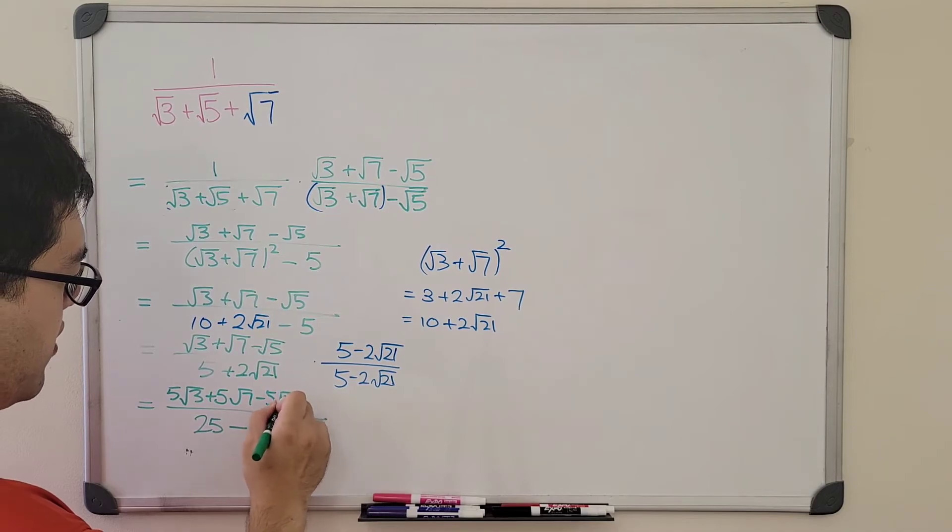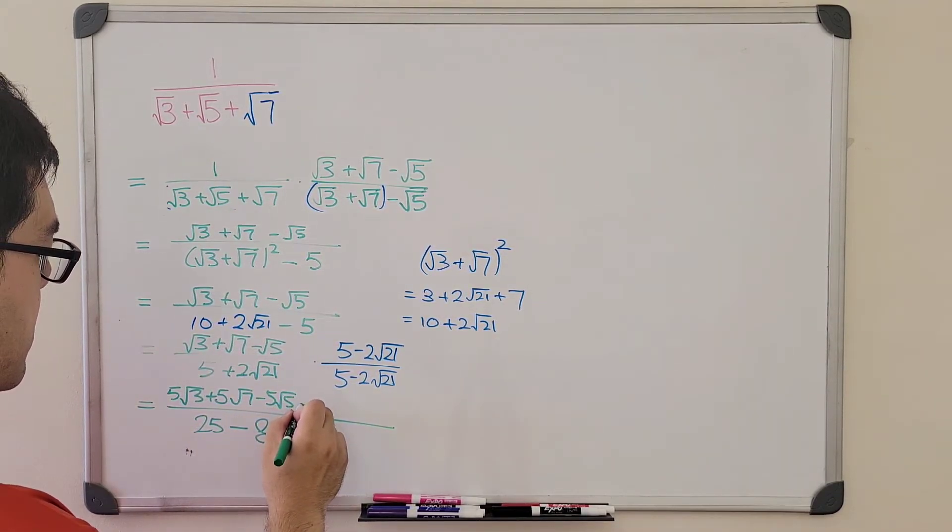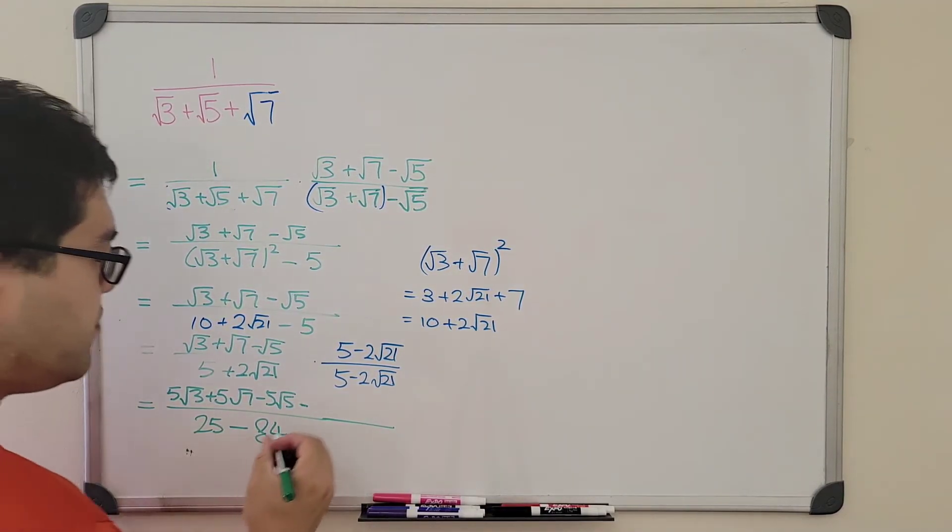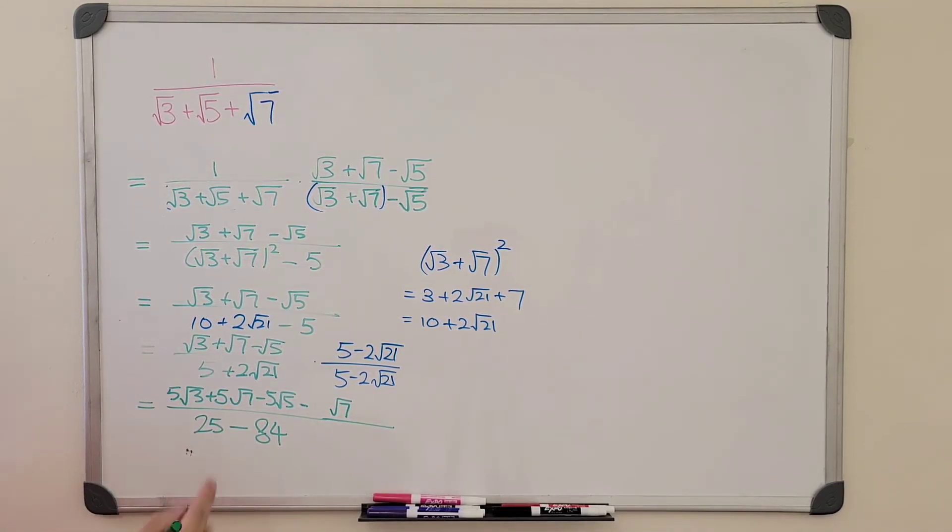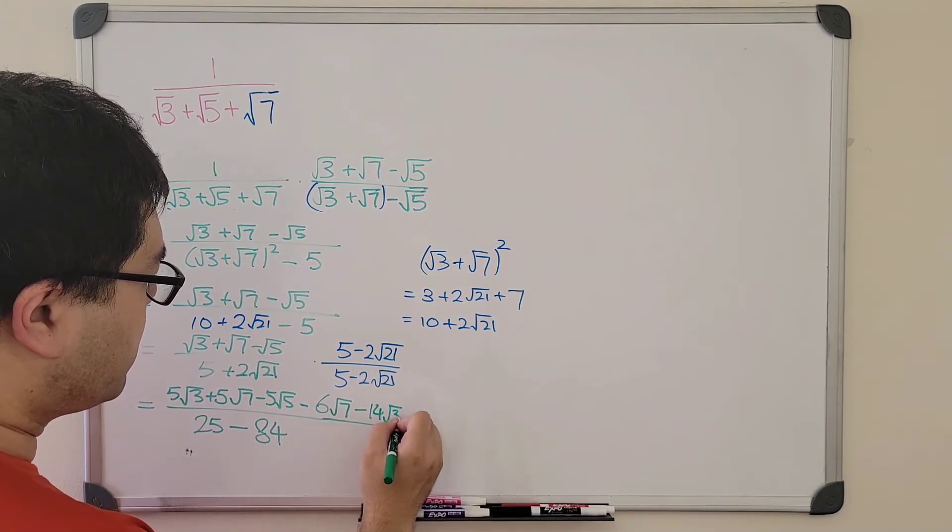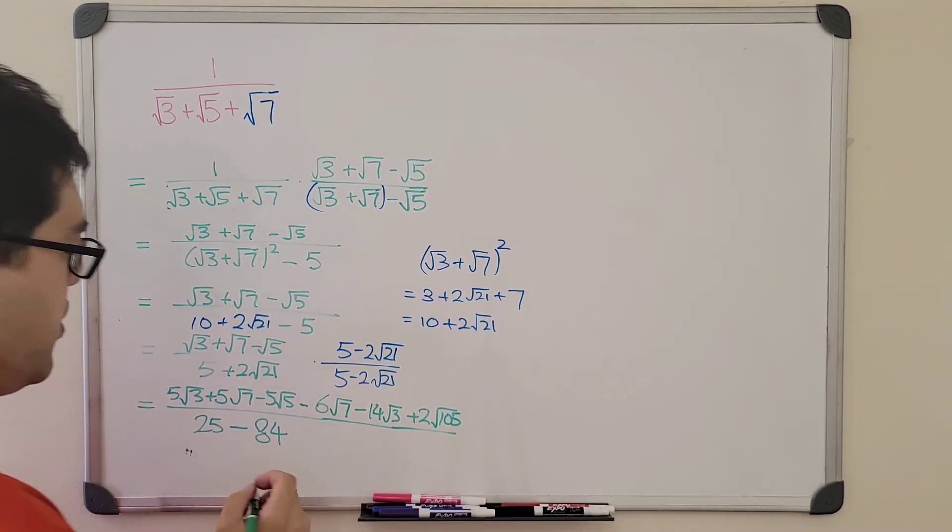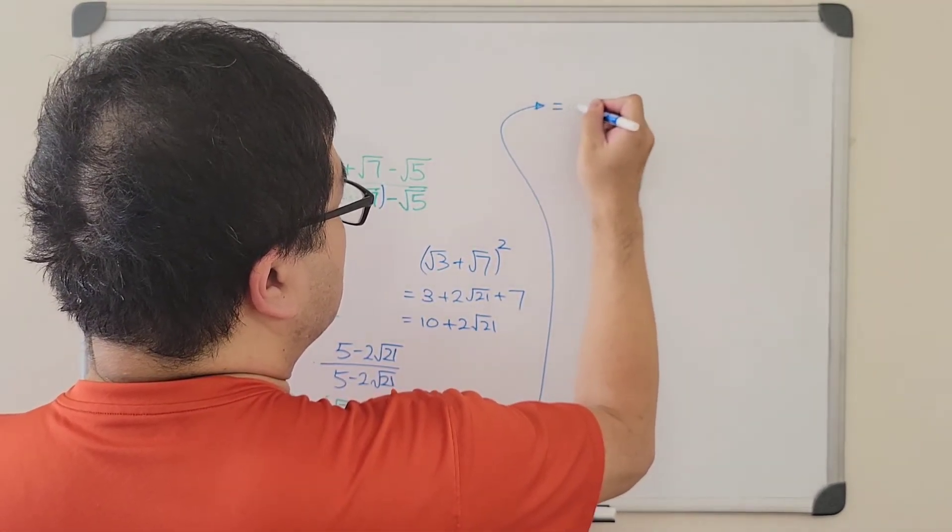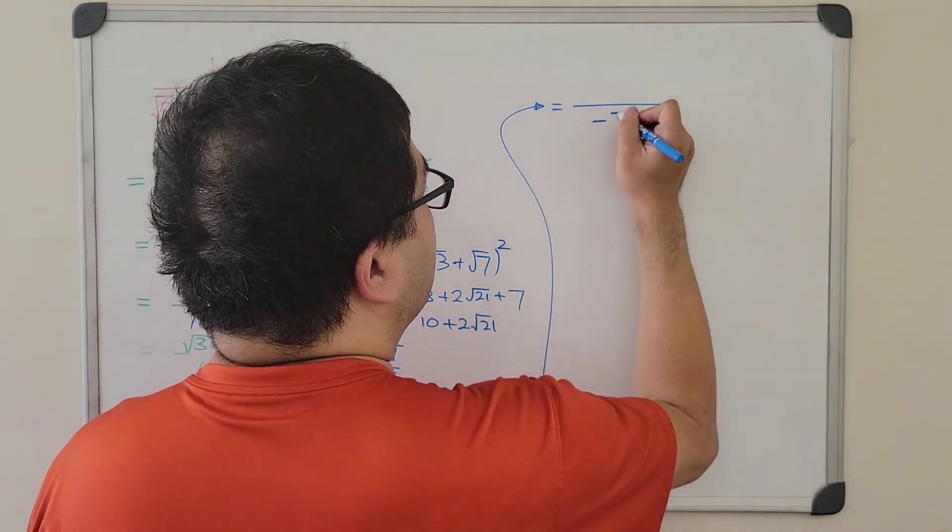5 minus 5 radical 5. And then here we're going to multiply with negative 2 times radical 21. So we get 21 times 3 is 63, which is 9 times 7. So 9 times 7 means that we have radical 7 here. 9 turns into 3, so we have 6. And then similarly, we get 14 radical 3. And then negative times negative is positive. So we finally get to our result, which is equal to, we have 25 minus 84, which is negative 59.